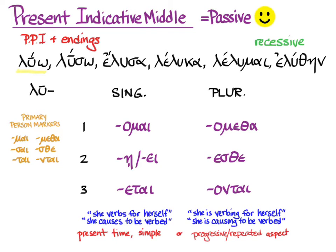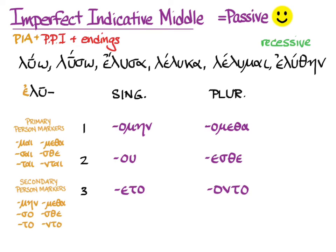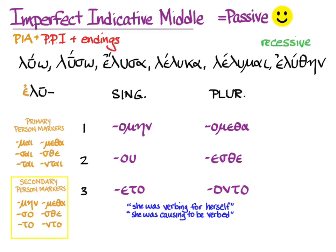Present tense can express present time and simple aspect, or present time and progressive/repeated aspect. To tell the difference between a middle verb and a passive verb, you'll have to look at the context. The biggest hint is if there's a direct object, because then it has to be the middle voice — the passive voice can't have a direct object. The imperfect indicative middle looks exactly the same as the imperfect indicative passive: first principal part plus the past indicative augment, secondary middle/passive person markers, recessive accent. The default translation is 'she was verbing for herself' or 'she was causing to be verbed,' because we are in past time with progressive/repeated aspect.